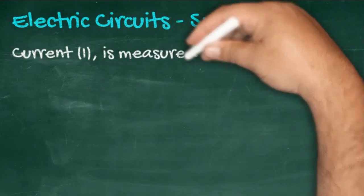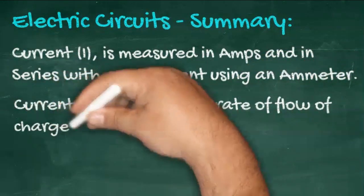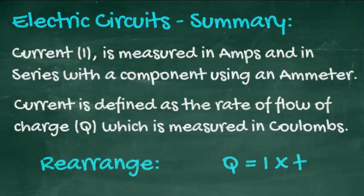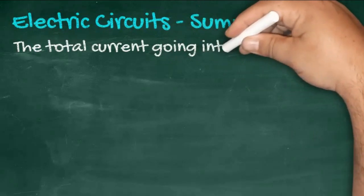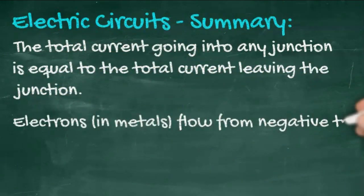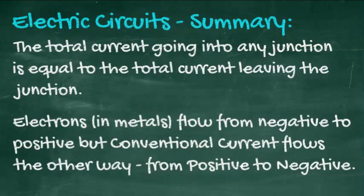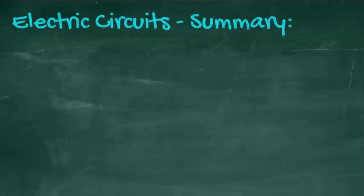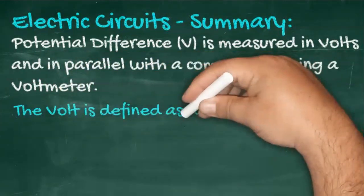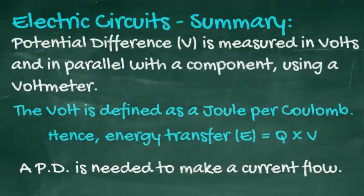So, a short recap of basic circuits. The current, given the symbol I, is measured in amps and in series with the component using an ammeter. Current is defined as the rate of flow of charge. Charge is given the symbol Q, measured in coulombs. Rearrange this to get Q equals I T. There is a law that states that the total current going into any junction is equal to the total current leaving that same junction. Electrons in metals flow from the negative to the positive - they're attracted by the positive - but by convention, we do it the other way round. Potential difference is given the symbol V and is measured in volts. It is measured in parallel with a component using a voltmeter. The volt is defined as a joule per coulomb. So if you rearrange that, you'll get energy is equal to charge times potential difference. And you need a PD in order to be able to make a current flow.